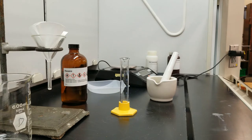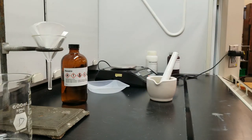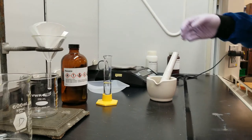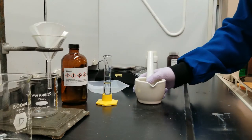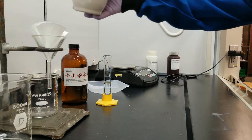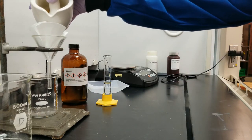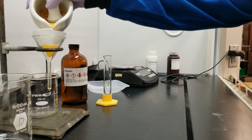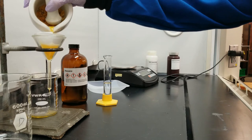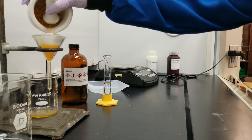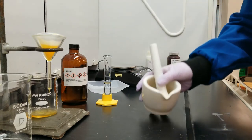So I'm going to pour off the hexane from my potato chips into my funnel. I'm going to try not to lose any potato chips. And while that's filtering, I'm going to add another portion of hexane to my potato chips.